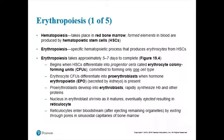When you're making cells, you start off with a stem cell. All three groups of cells in your blood — red blood cells, white blood cells, and platelets — all start off as the same basic stem cell. We call it a hematopoietic stem cell — just a basic immature stem cell that could become any of your three formed elements. The first step in making a red blood cell is being a hematopoietic stem cell.